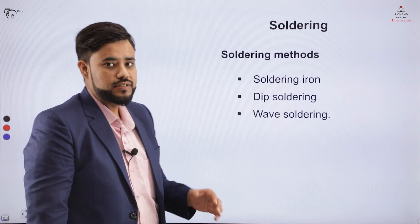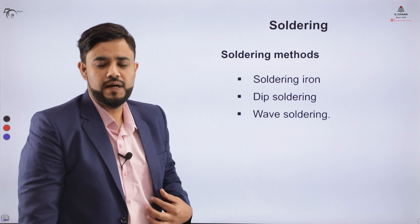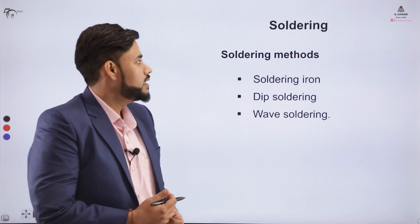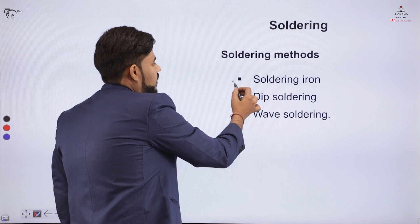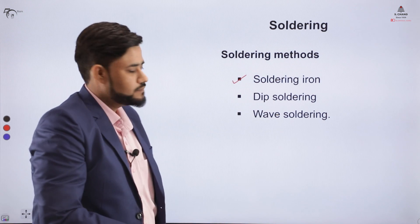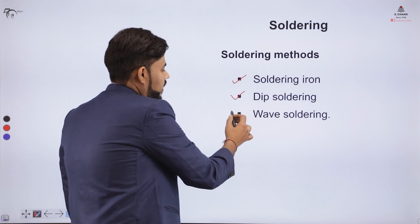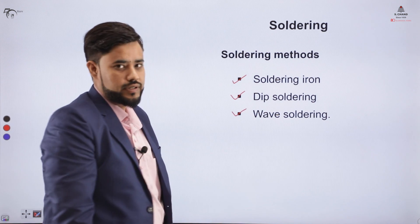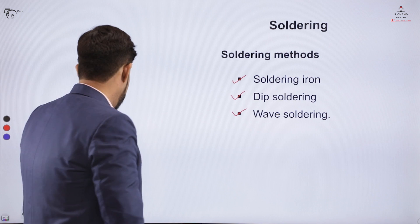There are certain methods involved in soldering. Method one is the soldering iron. Method two is dip soldering. Method three is wave soldering. Let us understand these processes one by one.